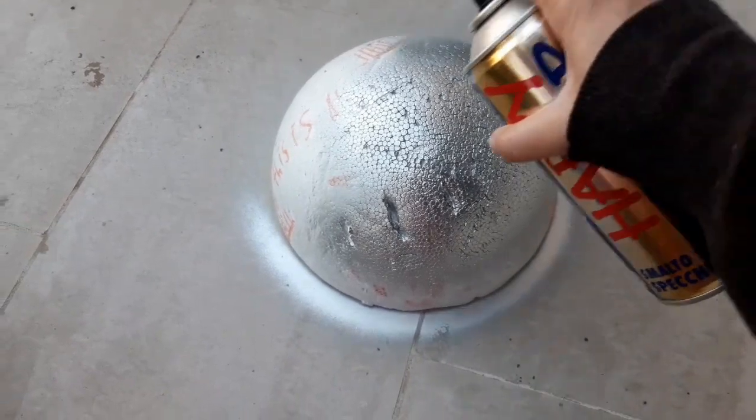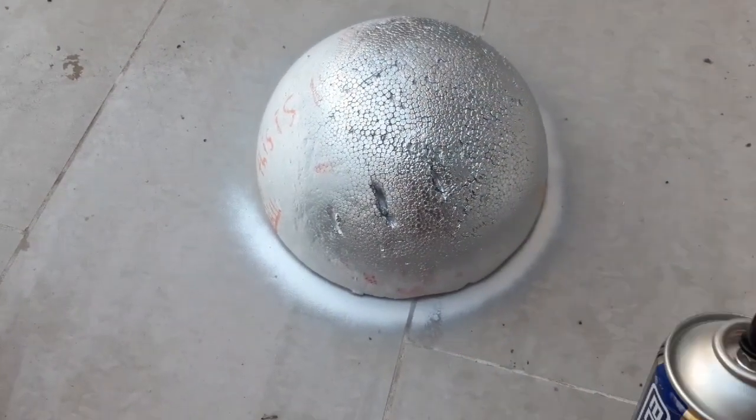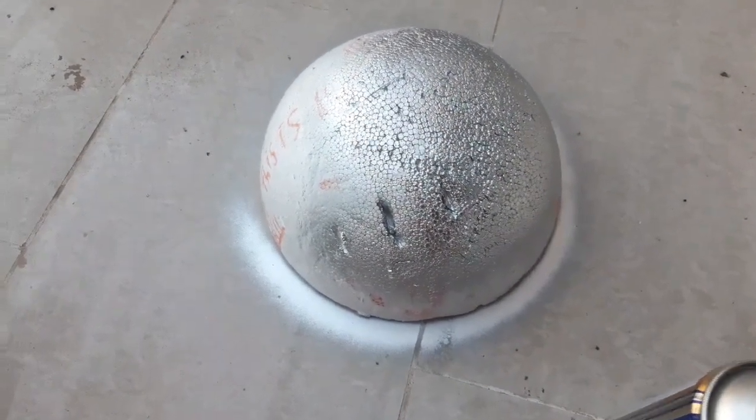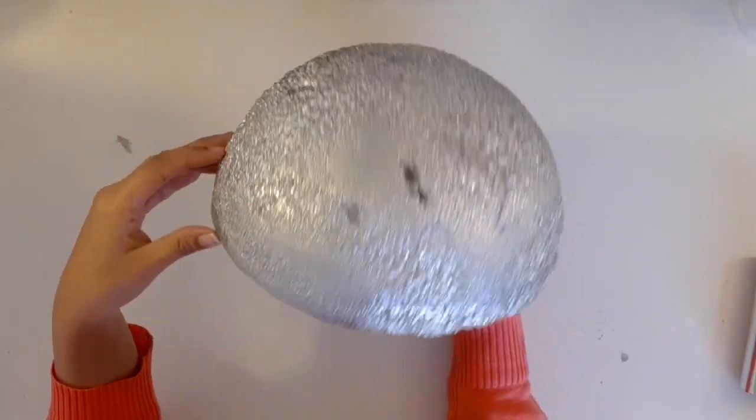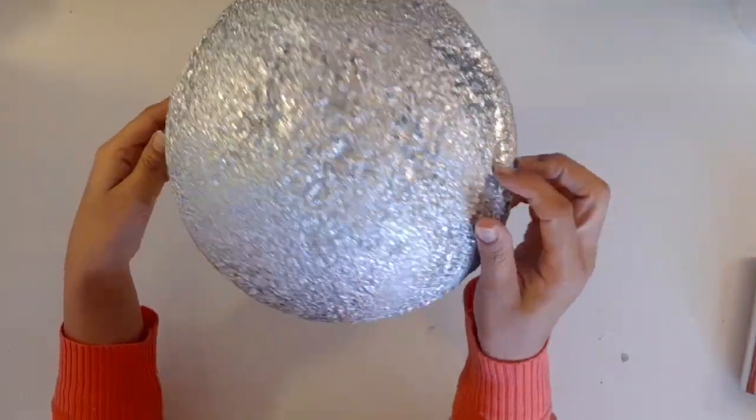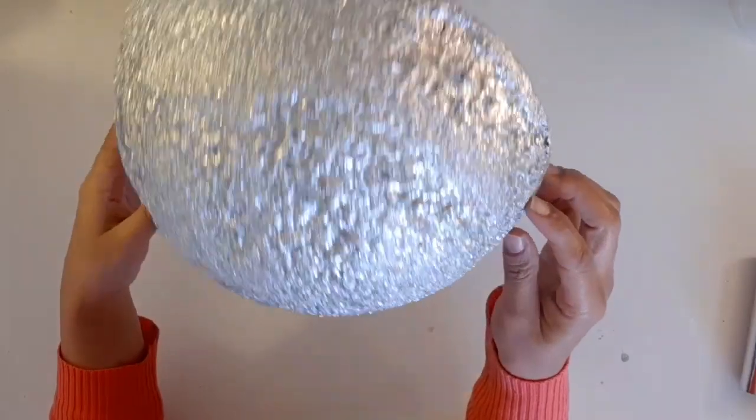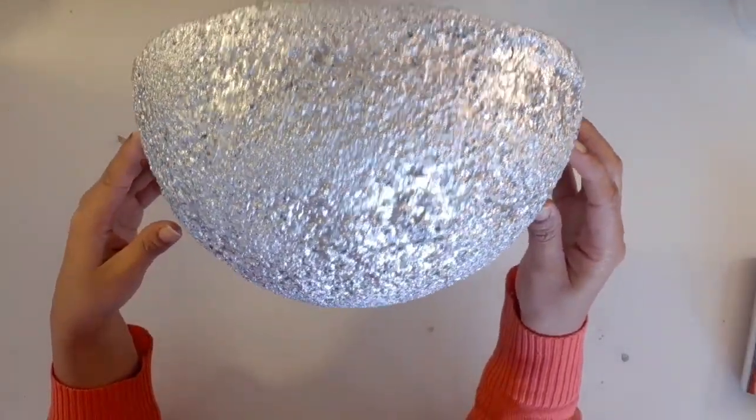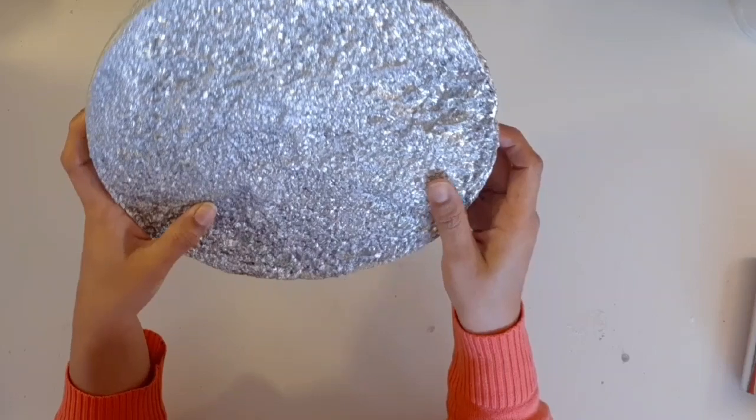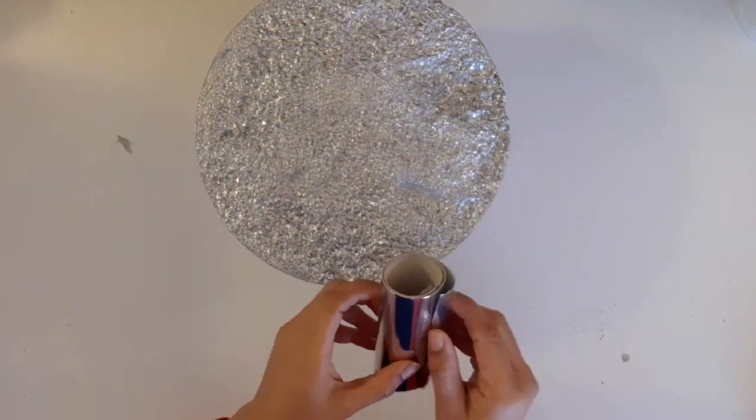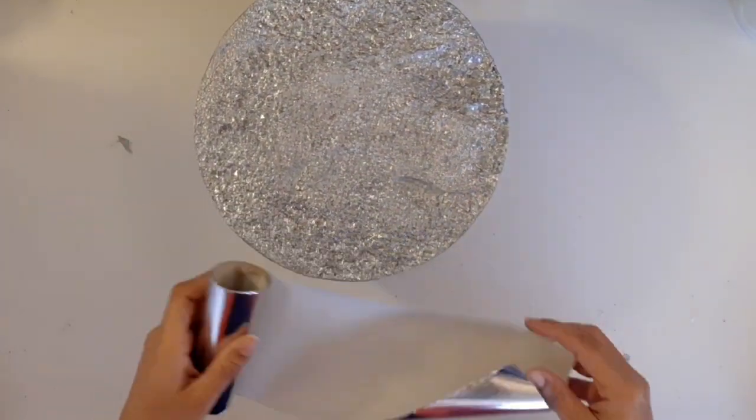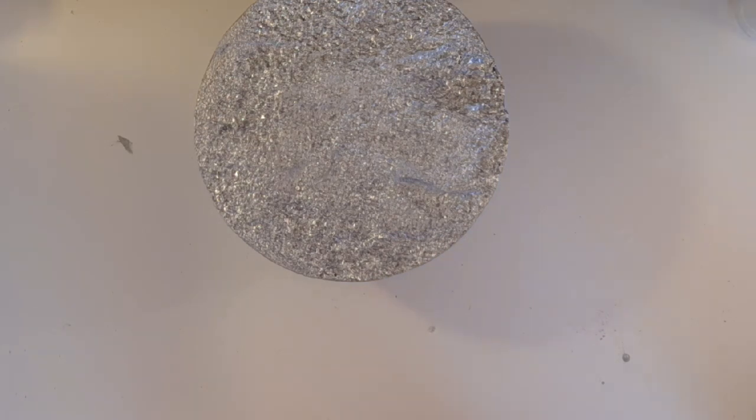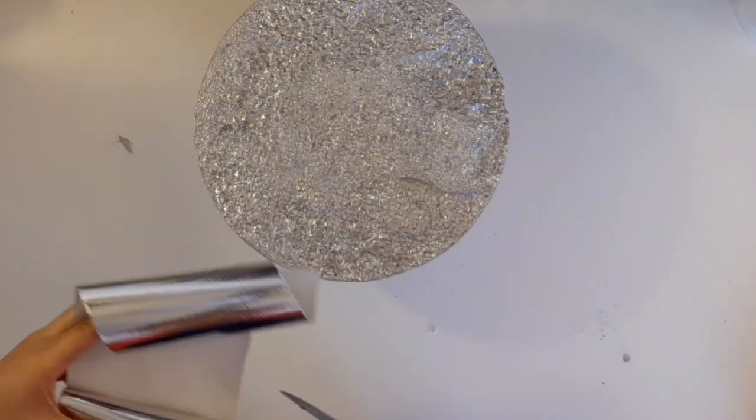The spray will melt the foam, which is actually the beauty of this one. Here you can see because of the spray, the foam has melted and it has given it a nice beautiful texture. And now I will use this silver paper again for the circle edges. I will apply the silver on all around the styrofoam ball.